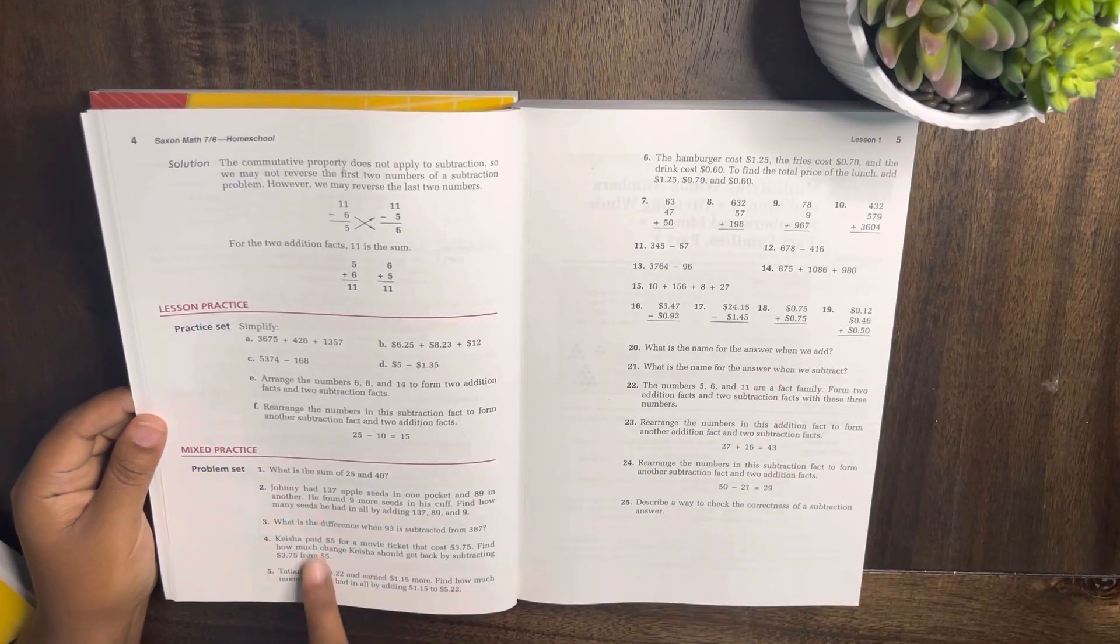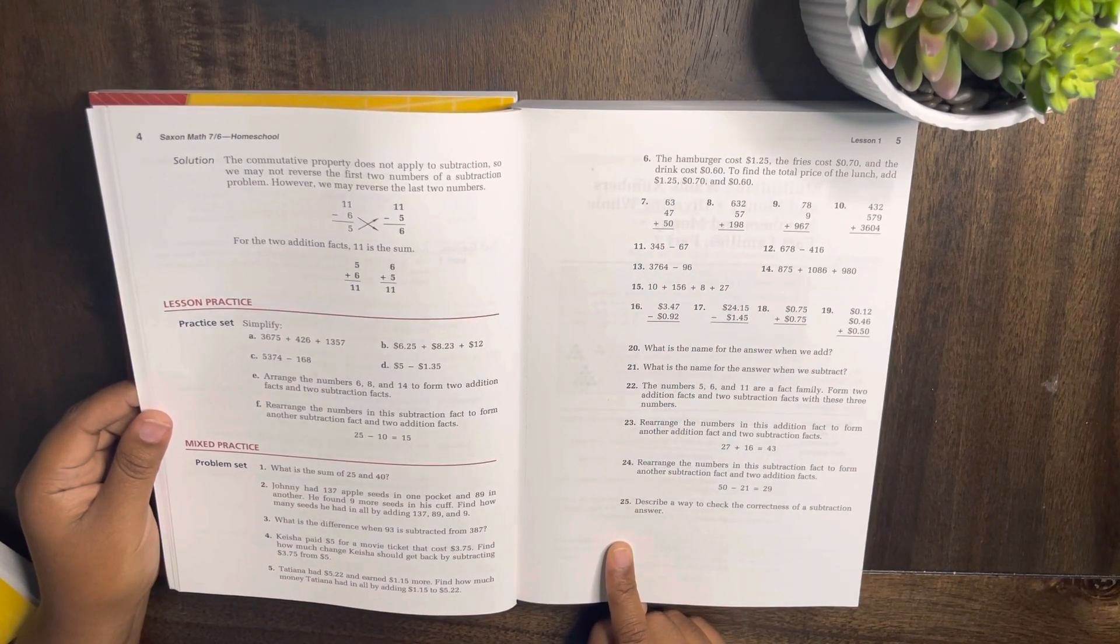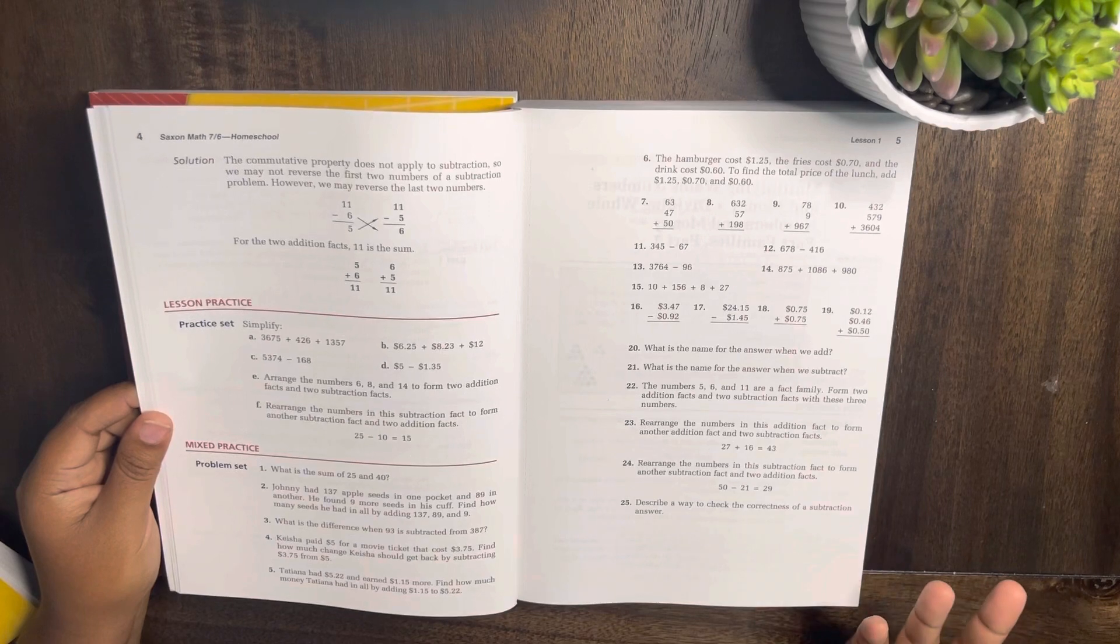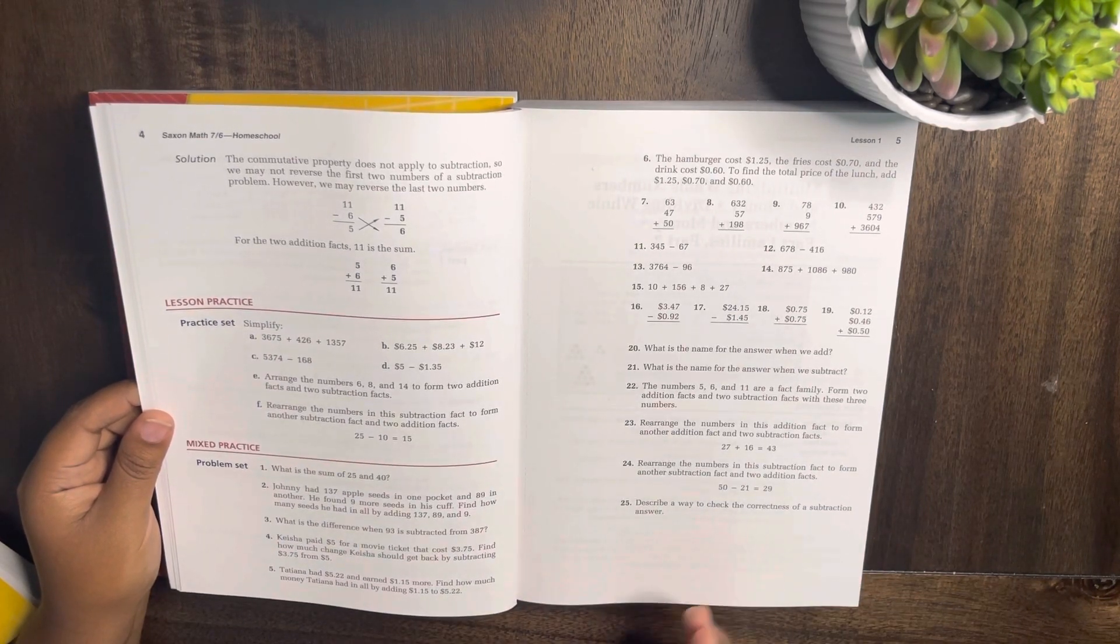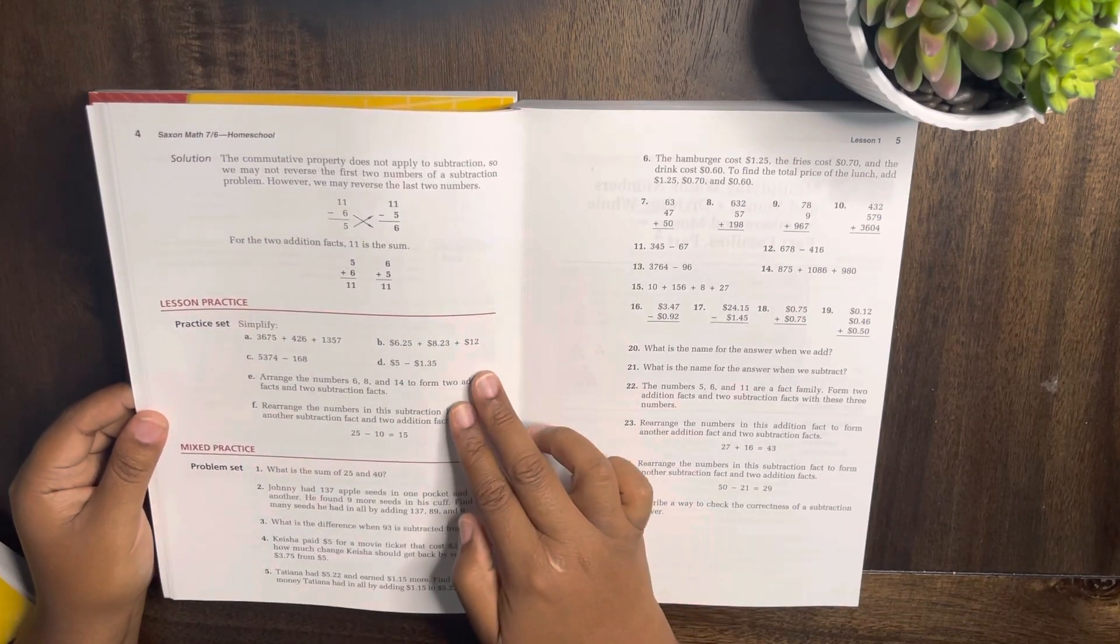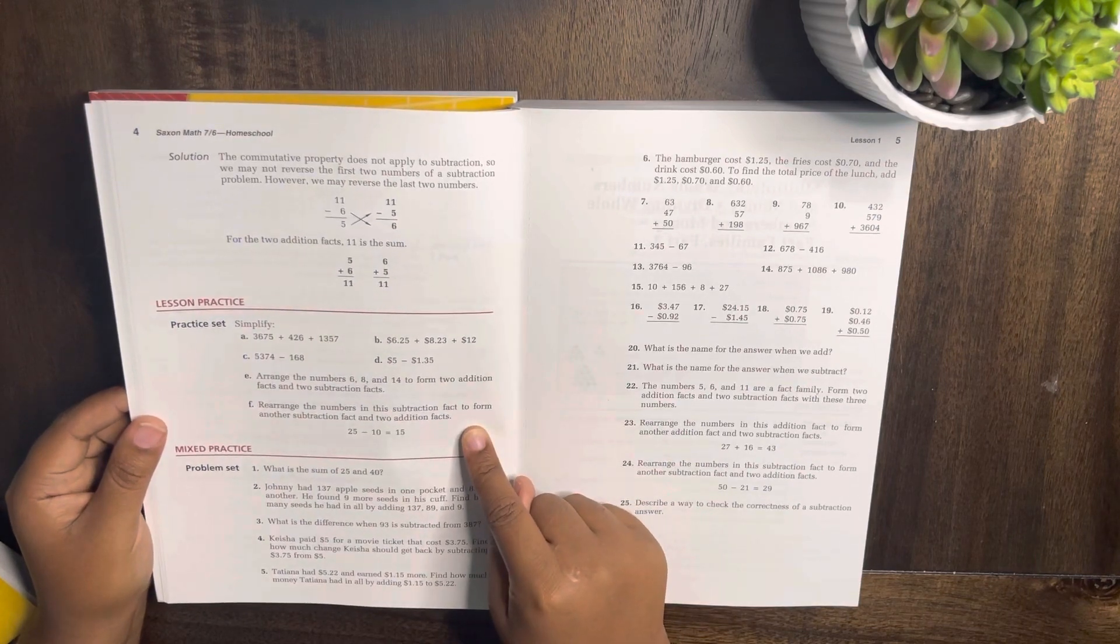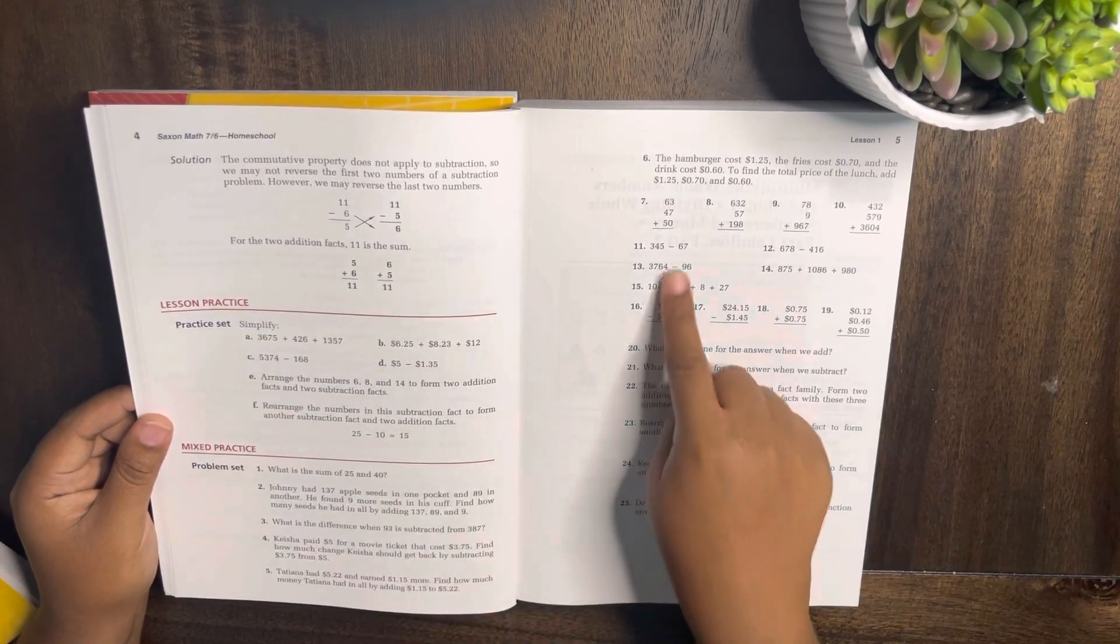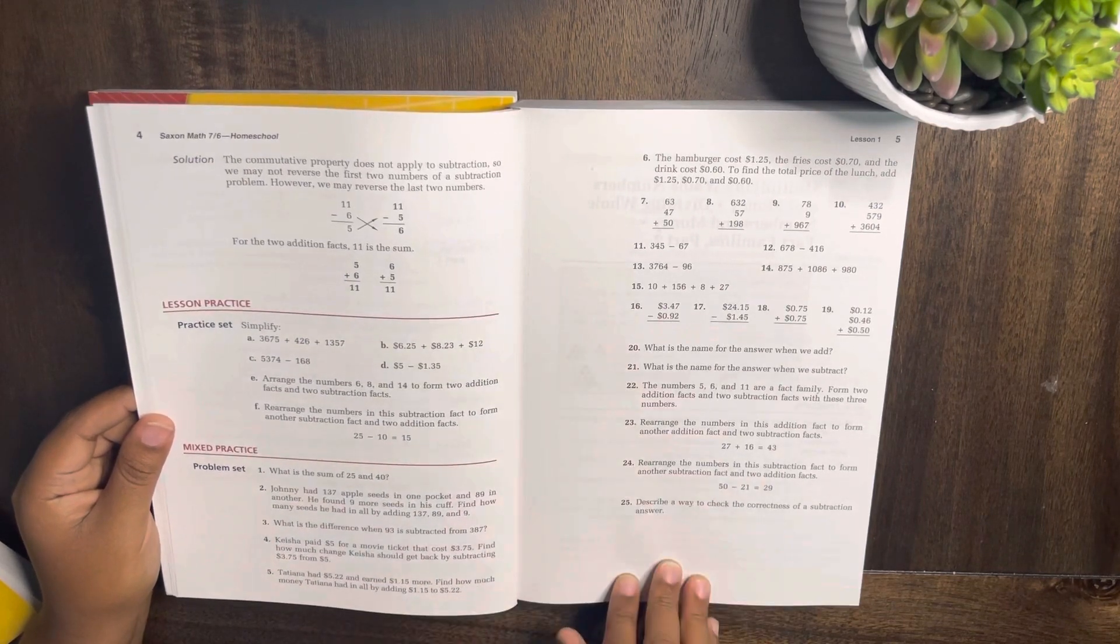Mixed practice - I see mixed practice is about 25 questions, so that might take a little bit longer if you're planning on doing all of it. For me, I'll probably depend on how my child does with the lesson practice. And then whatever problem, if they get something wrong in this area, I would pick problems from the mixed practice that are the same and let them work on those instead of just doing all of it.